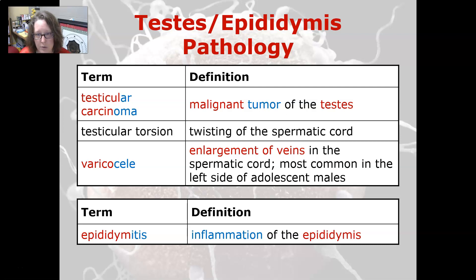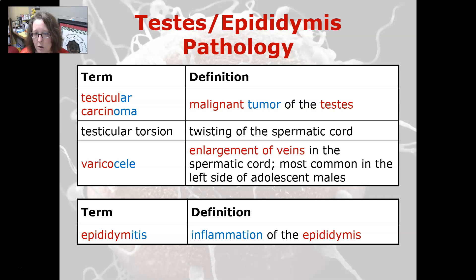Testicular carcinoma is a malignant tumor of the testes. Testicular torsion is the twisting of the spermatic cord. Varicocele is an enlargement of the veins in the spermatic cord; it is most common in the left side of adolescent males. And epididymitis is an inflammation of the epididymis.